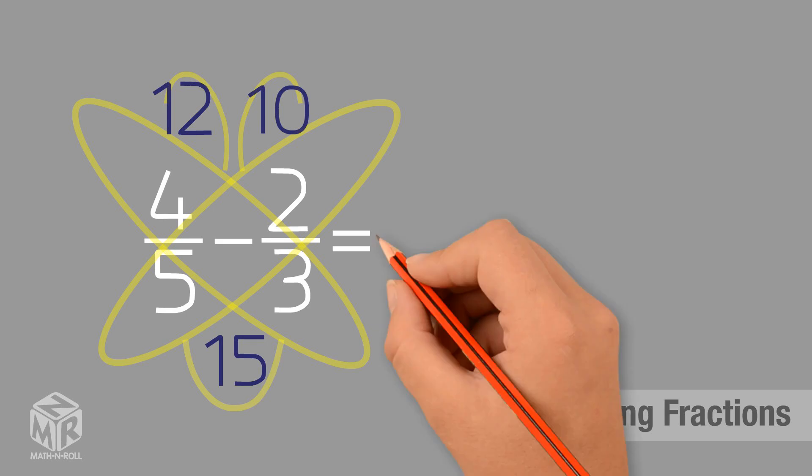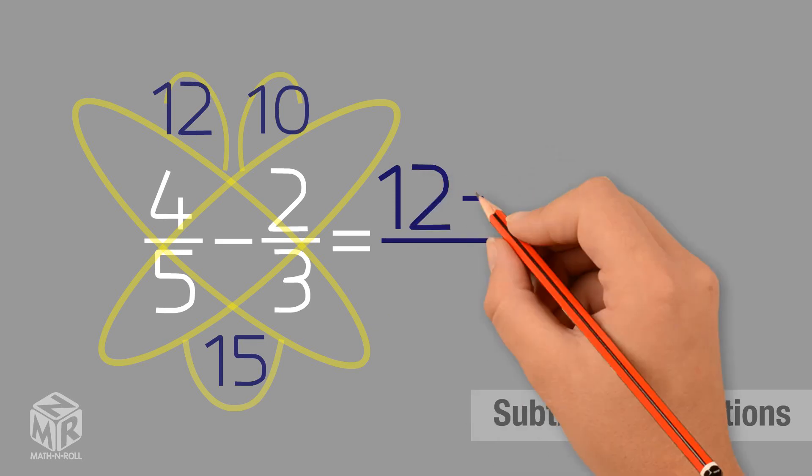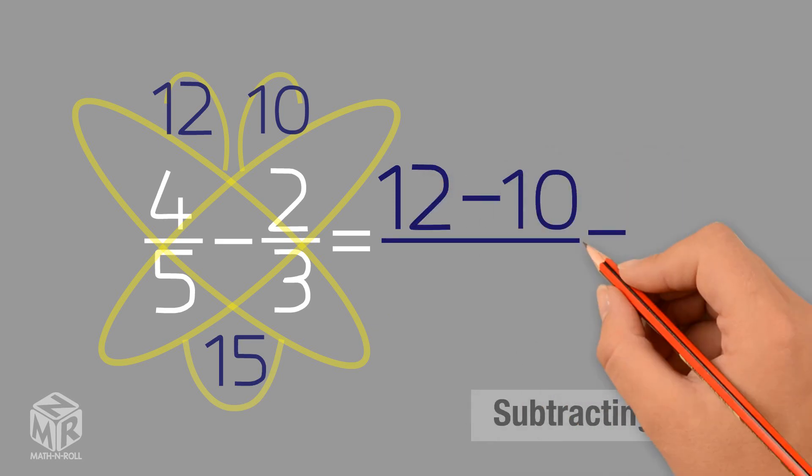5 times 3 equals 15. Now we subtract the numbers inside of our antennas. We put this number in the numerator. 12 minus 10 equals 2. 2 is our numerator, and 15 is our denominator. So 4 over 5 minus 2 over 3 is 2 over 15.